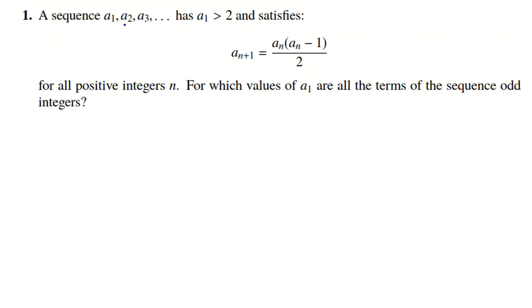The problem says: a sequence a1, a2, a3, and so on has a1 greater than 2, so all terms are greater than 2, and satisfies a certain recurrence for all positive integers n. For which values of a1 are all the terms of the sequence odd integers? So a1 also should be odd, and all terms are at least 3.